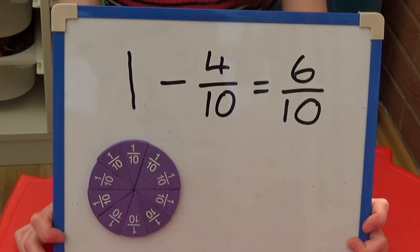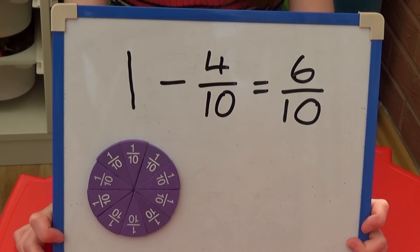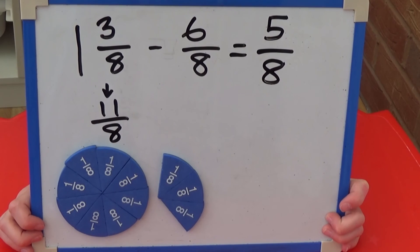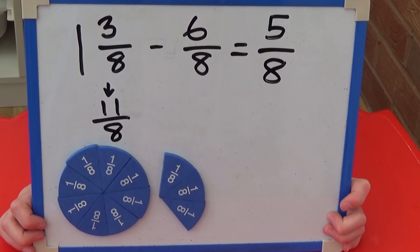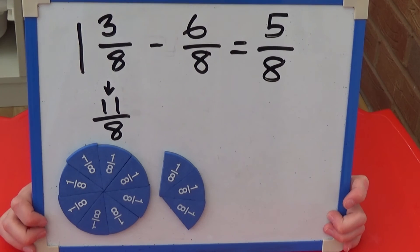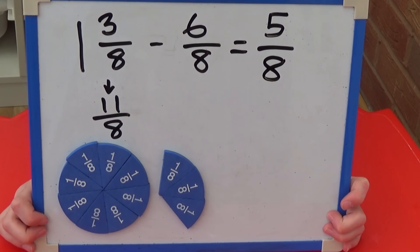One whole or ten tenths take away four tenths equals six tenths. One and three eighths or eleven eighths take away six eighths equals five eighths.